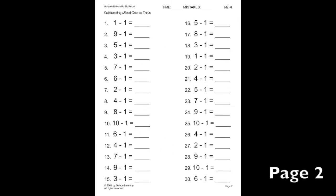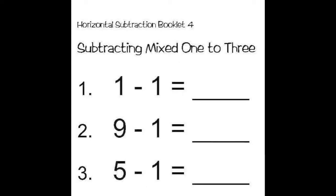Now we'll work on some more subtraction on the first drill page. Let's look at number 1 first. Here we have 1 minus 1 which equals 0. Following that is 9 minus 1 which is 8, and 5 minus 1 which is 4.